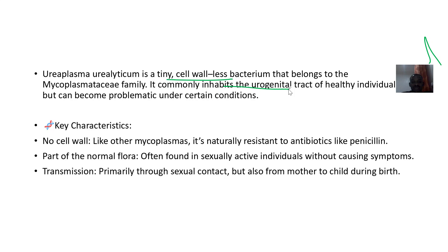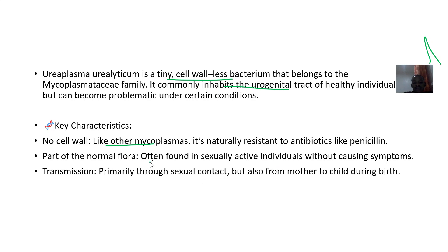Various things could make you develop issues, including being immunosuppressed. A key characteristic is that there's no cell wall, so like other mycoplasmas it is naturally resistant to antibiotics like penicillins, because penicillins require the bacteria to have a cell wall to act. It is part of the normal flora and is often found in sexually active individuals without causing symptoms. Transmission is through sexual contact but can also be transmitted from mother to child.